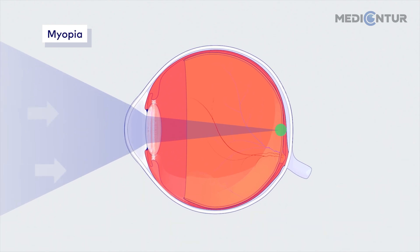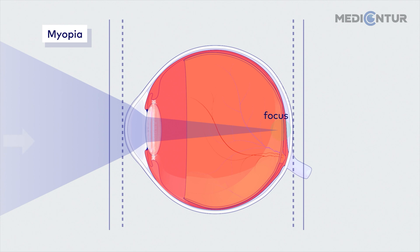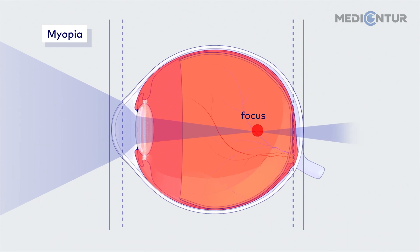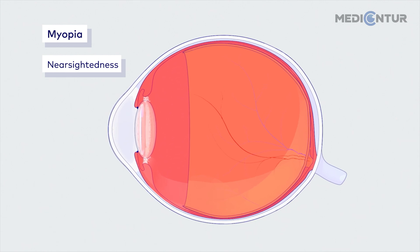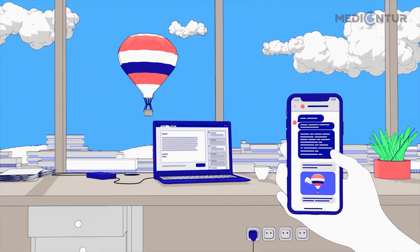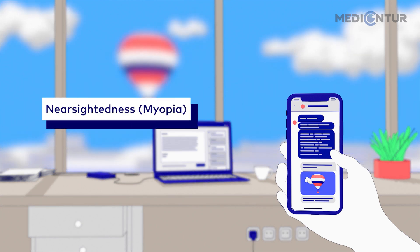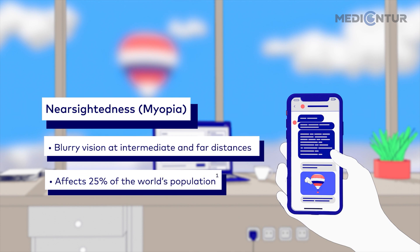Due to a combination of genetic and environmental factors, the eyeball can grow to various lengths. When it grows too long, light is focused in front of the retina. This condition is called myopia, more commonly known as nearsightedness. It allows one to see nearby objects, but causes blurry vision for objects far away. An estimated 25% of the world's population can be diagnosed as myopic.